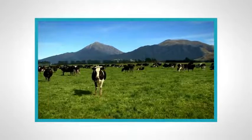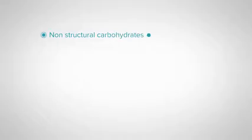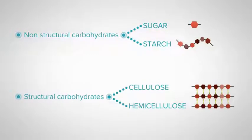There are two main types of carbohydrates that are found in feeds. Non-structural carbohydrates, which contain sugar and starches. And structural carbohydrates, which include the cellulose and hemicellulose. These carbohydrates are all made up of sugar molecules, with the only difference being the chemical bonds that join them together.